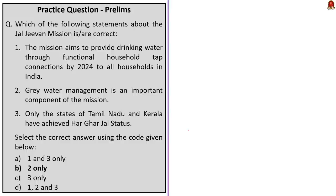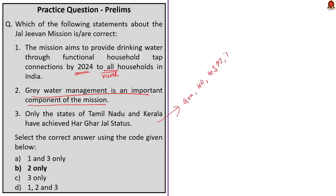Statement 1 is incorrect — the scheme focuses only on rural areas, not all households broadly. Statement 2 is correct — grey water management is an important component of this mission. Statement 3 is incorrect — according to the recent Jal Jeevan survey, the states and union territories that have achieved 100% functional household tap connection include Goa, Haryana, Gujarat, Punjab, Telangana, Andaman and Nicobar Islands, Dadra and Nagar Haveli, Daman and Diu, and Puducherry. The correct answer for this question is option B: 2 only.